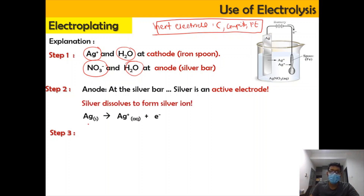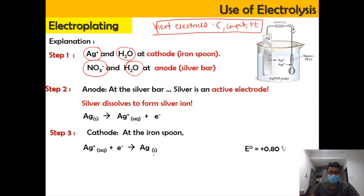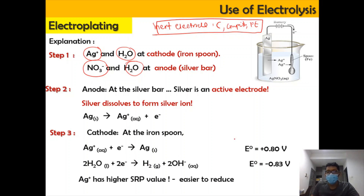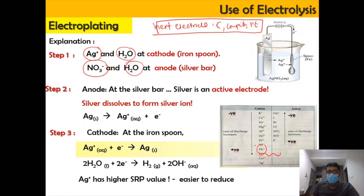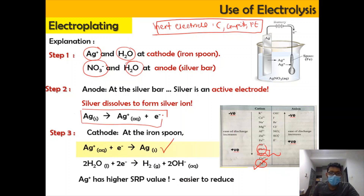When the active electrode takes part in the chemical reaction, the solid forms ions. At the cathode, we have two options: Ag⁺ ions forming silver solid, or H₂O undergoing reduction to form hydrogen gas. But we will select the more positive SRP value for reduction at cathode. Ag⁺ is lower in the electrochemical series and easier to be discharged compared to H₂O — that is why Ag⁺ is selected. So the equation at anode is silver solid → Ag⁺ aqueous + e⁻, and the equation at cathode is Ag⁺ aqueous + e⁻ → silver solid.